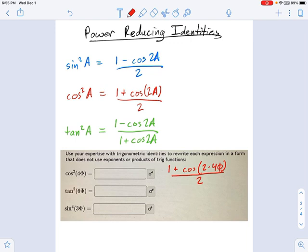And what's that going to be? Well, that'll be... I guess we could separate this into two different fractions if you want, but you don't have to. It's going to be 1 half plus 1 half cosine of 8 phi.